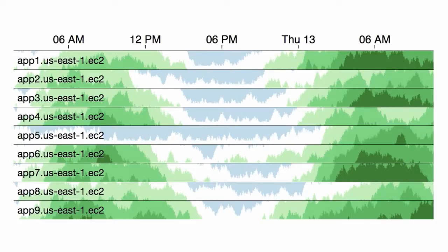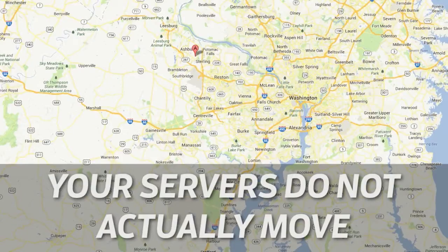So we graph everything about our service. We graph the length of time it takes to serve a web page. We graph the number of errors. We graph everything in proc, even though we don't understand it. And there's one problem with this as a theory, which is that our servers don't actually move. Even the magic cloud servers that we get from Amazon, they're stuck in a data center in North Virginia. And if they don't move, why are we graphing them?